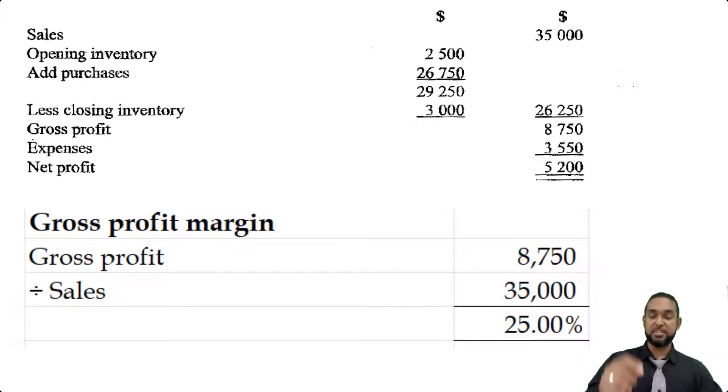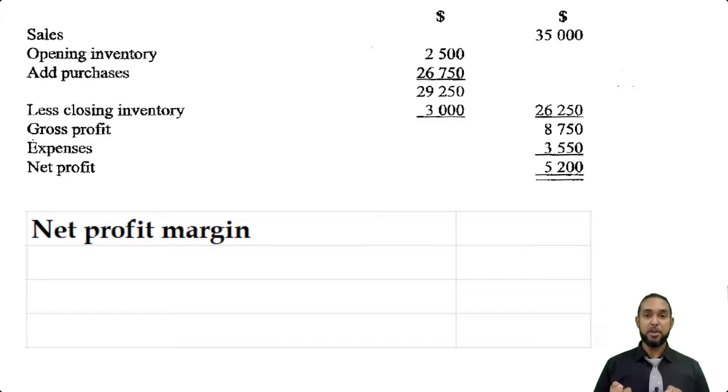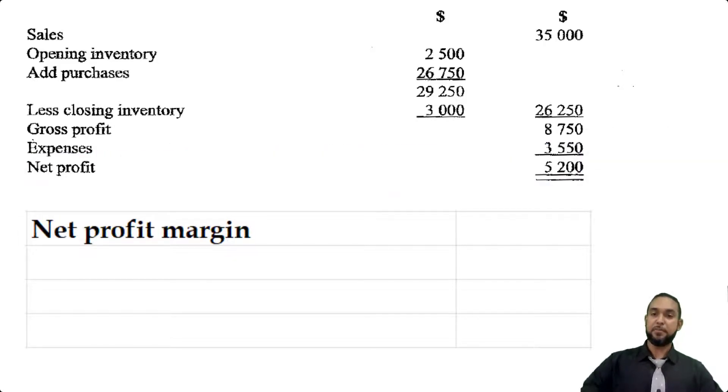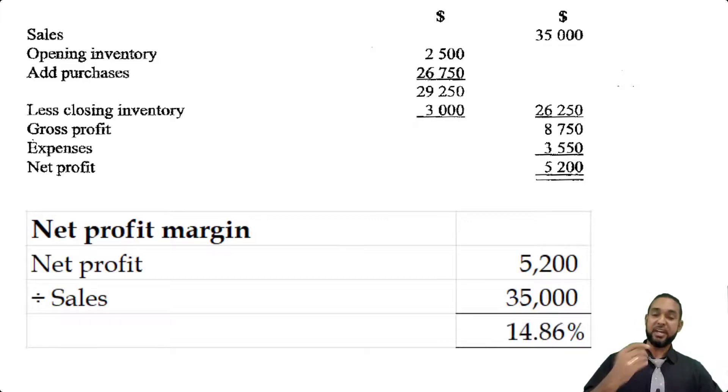Now the next profitability ratio is the net profit margin. Just like the gross profit margin, the net profit margin is net profit expressed as a percentage of sales. So your net profit was 5,200 and your sales was the same 35,000. So when we divide net profit by sales we get approximately 14.86%. That's the percentage of sales revenue left as profit after covering all expenses.